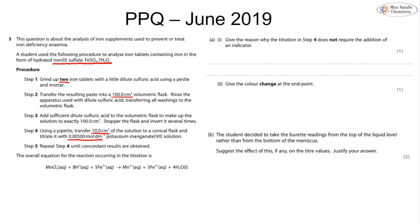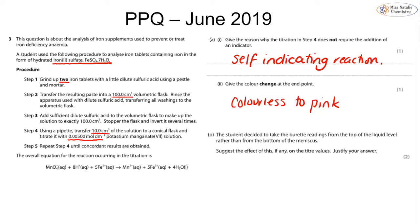Part (a) asks why the titration with potassium manganate does not require an indicator. The answer is simply that it is self-indicating — remember you will write in full sentences in the exam. The color change at the end point starts off colorless and then we see a permanent pink color, though it can sometimes revert back, so it's easy to describe it as colorless to pink.